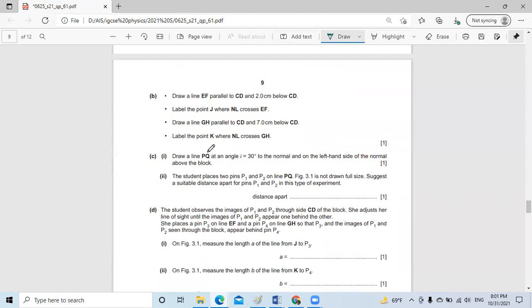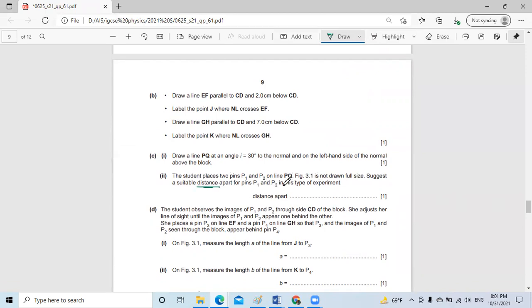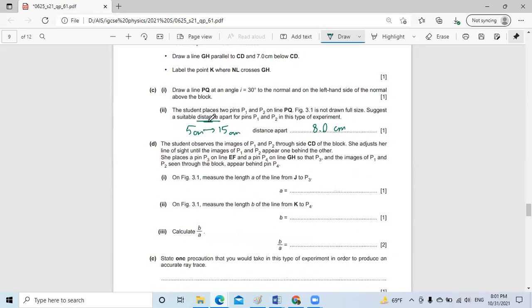We have only to follow the instructions as all paper six. The student places two pins P1 and P2 on line PQ. They are not shown in full size, so just a suitable distance between PQ and the pins P1 and P2. Actually the distance is supposed to be between 5 cm to approximately 15 cm on the trace sheet, so I will put approximately 8.0 cm. This is the suggestion of the distance between the pins to be more accurate.